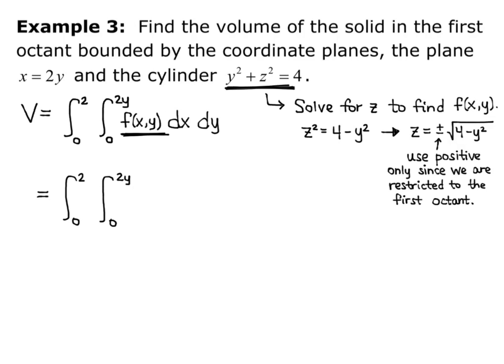So we have volume is the double integral from 0 to 2, and 0 to 2y, of square root of 4 minus y squared, dx, dy. And we always work our way from the inside outward, so we're going to focus on that inner integral, 0 to 2y, of the square root of 4 minus y squared, dx.